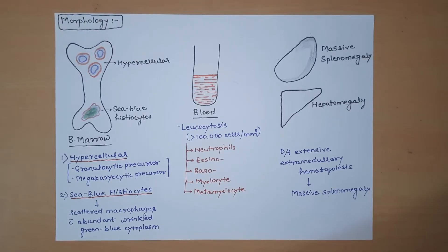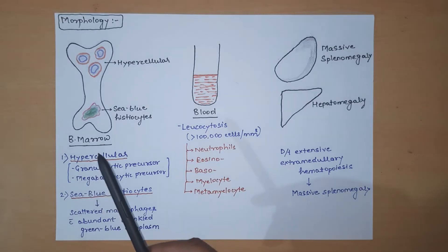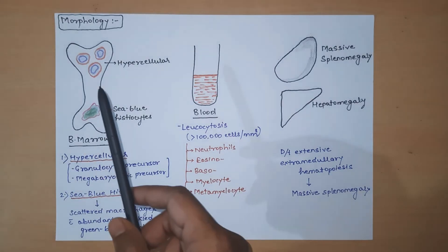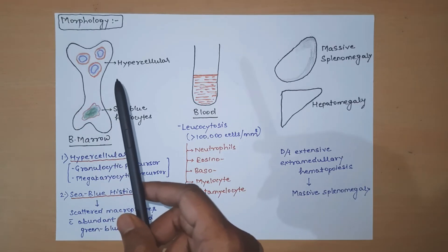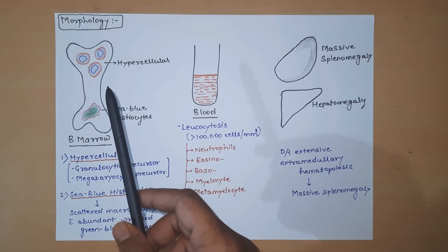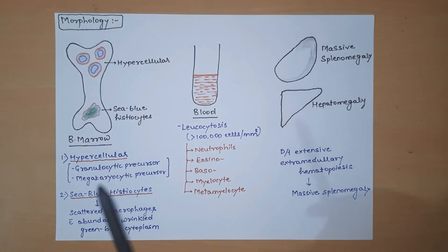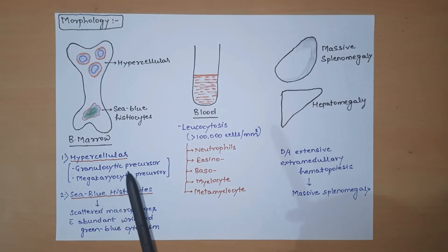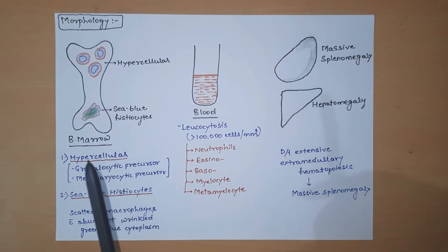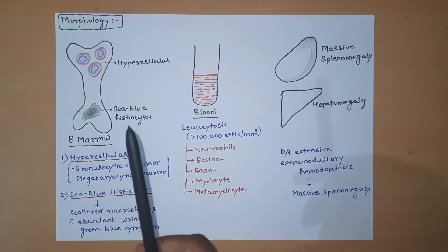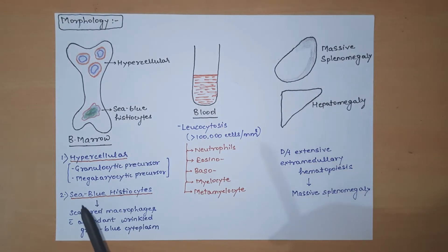Coming to the morphology of CML: on bone marrow biopsy, we see a hypercellular condition in patients of CML. This hypercellular condition is actually due to the excessive proliferation seen in granulocytic precursor and megakaryocytic precursor cells. We also see sea-blue histiocytes in the bone marrow.